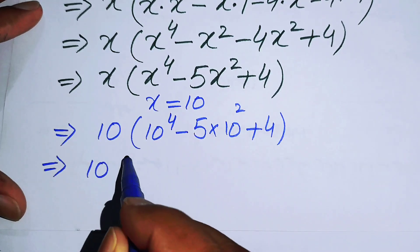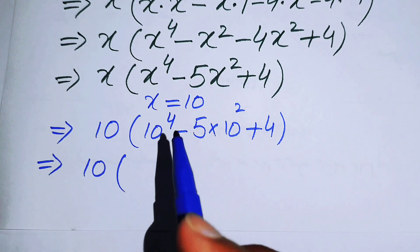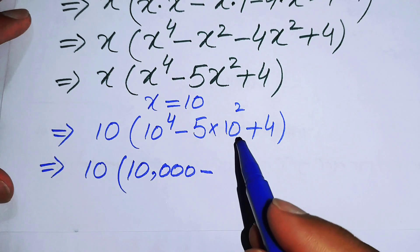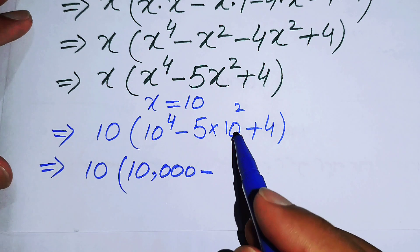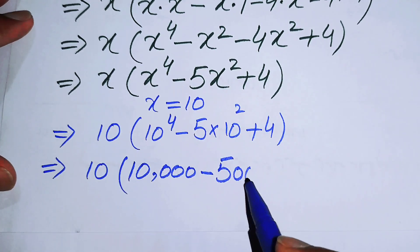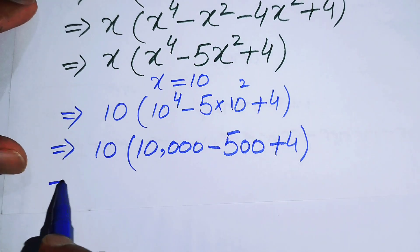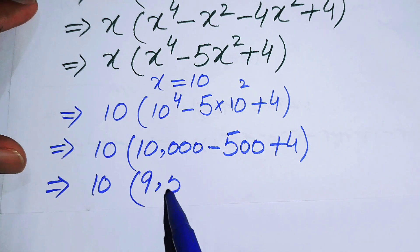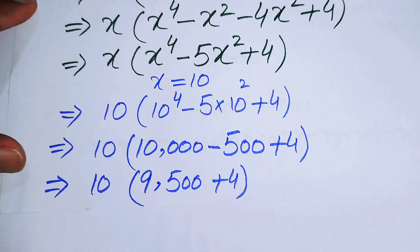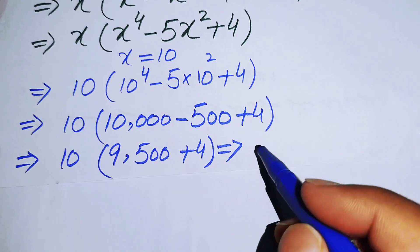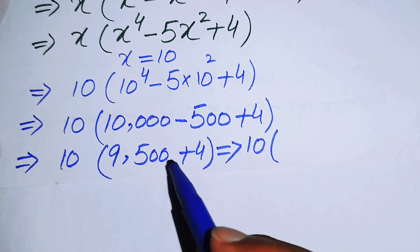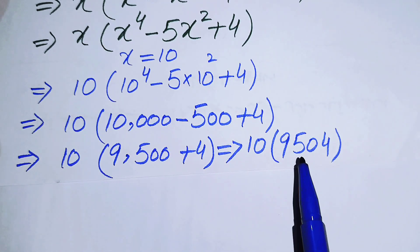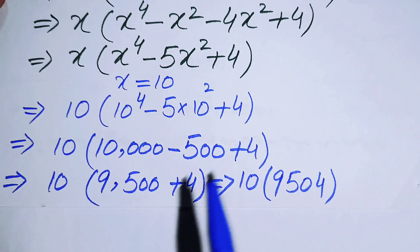Now calculating: 10 to the power 4 equals 10,000. Then 5 times 10 squared equals 5 times 100 equals 500. So inside the bracket we have 10,000 minus 500 plus 4, which equals 9,504. Multiplying by 10 gives 95,040.